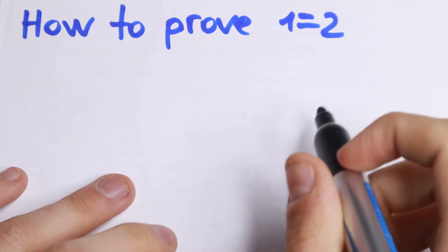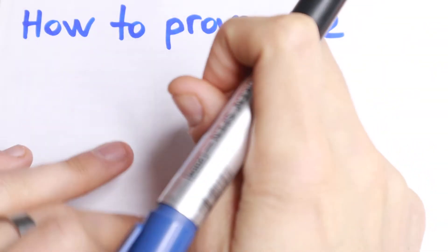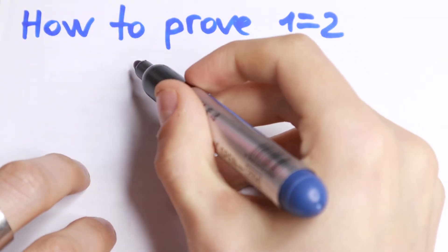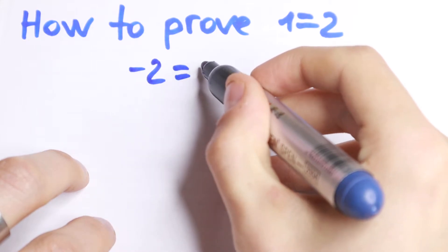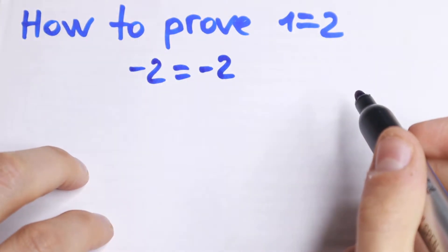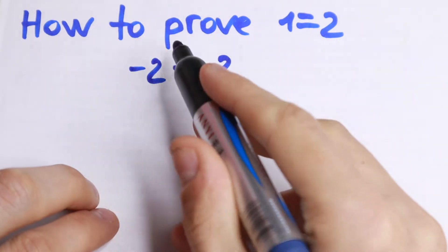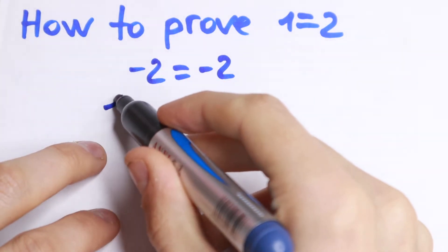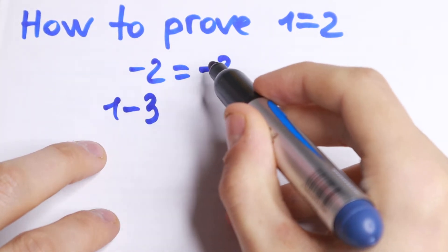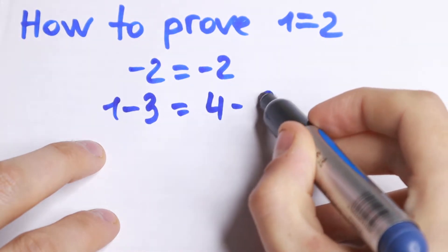So first of all, let's start with the obvious one. Let's write that minus 2 equal to minus 2. We'll have that this is correct, because minus 2 equal to minus 2. But this minus 2 can be written as 1 minus 3, and this minus 2 can be written as 4 minus 6.